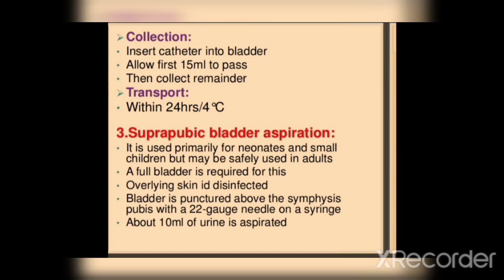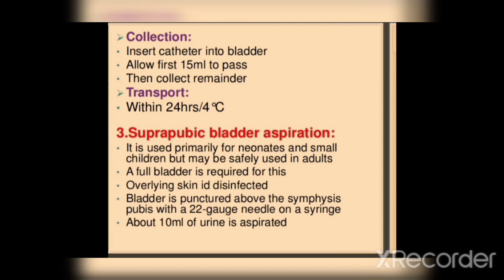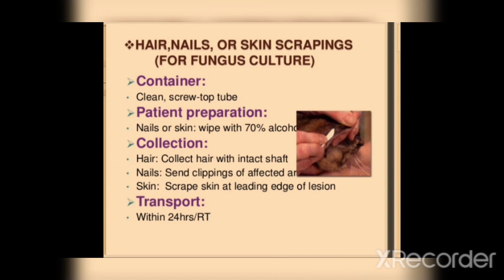Third point: suprapubic bladder aspiration. This is used in small children and adults when it is safe. The patient must have a full bladder. The overlying skin is disinfected and the bladder is punctured with a 22-gauge needle, aspirating 10 ml of urine. For nails or skin scraping for fungal culture, collect in a sterile screw cap tube.